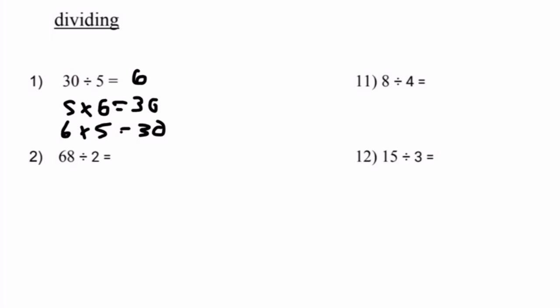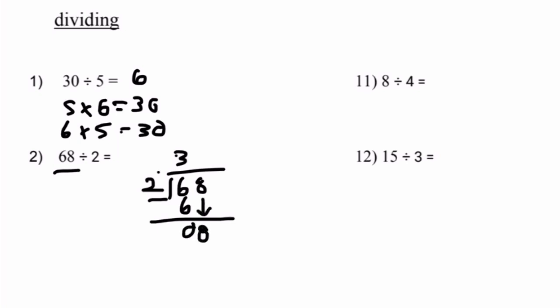Number two: 68 divided by 2. 68 is a much bigger number compared to the other problems we usually solve. In this case, we set it up like a long division problem. 2 goes into 6, 3 times. 3 times 2 equals 6. Then you subtract — 6 minus 6 equals 0. Bring down the 8. 2 goes into 8, 4 times. 4 times 2 equals 8. We subtract — 8 minus 8 equals 0. Therefore, 68 divided by 2 equals 34.